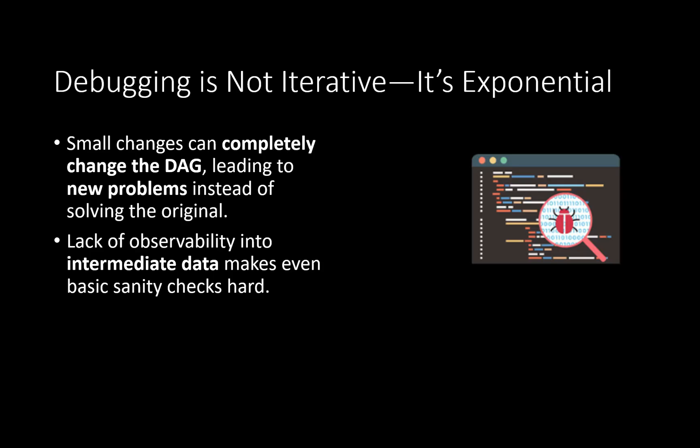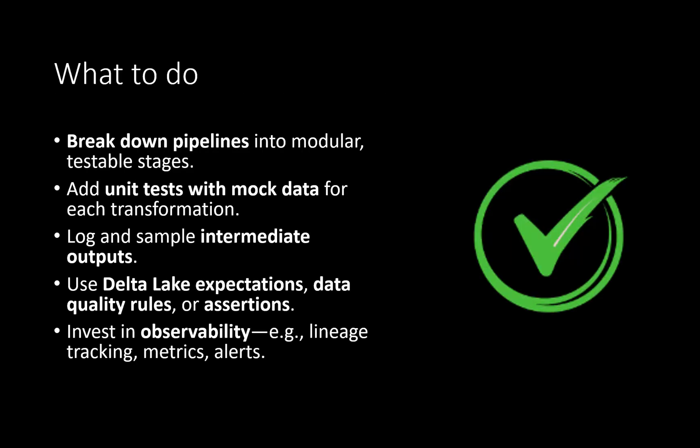It is advisable to have good observability — any intermediate data the Spark job creates should be persisted or cached and checked at each stage. Invest in monitoring, logging, and observability so that debugging becomes easier later. In summary: break down the pipeline into modular testable stages, do thorough testing and logging, use inbuilt features, and invest in monitoring and observability. These are basic things every programmer should do. I hope this video has helped you. Please like, share, and subscribe for more videos on Spark and Big Data technologies. Thank you.